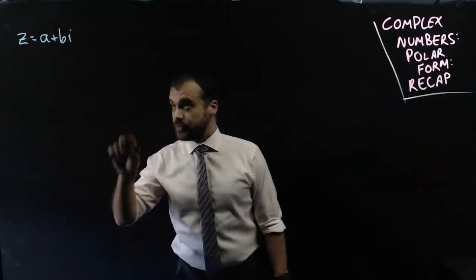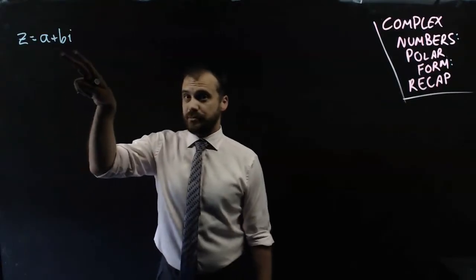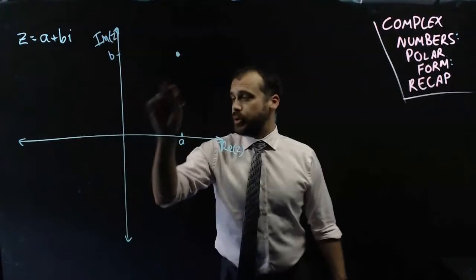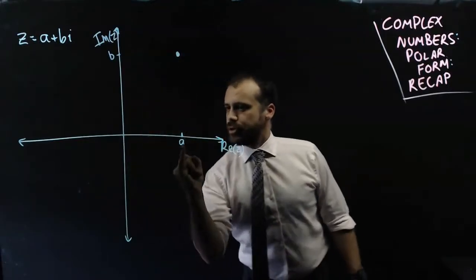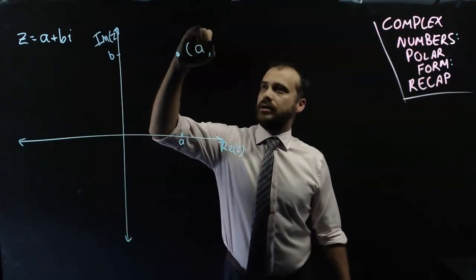Now a complex number in Cartesian form can be expressed as A plus Bi, real component, imaginary component. Put it on an Argand diagram like this, and we get a point on an Argand diagram, real component, imaginary component. So its coordinates are A, B.